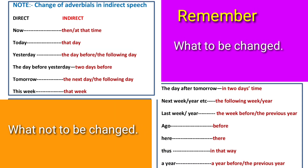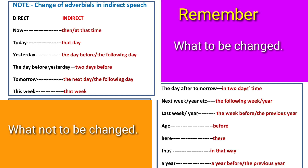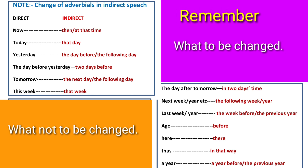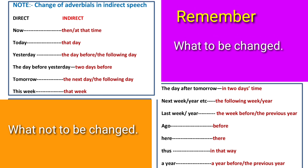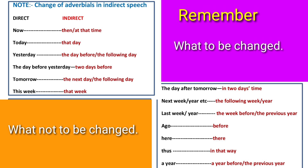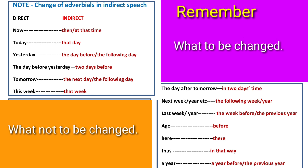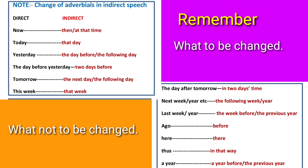Look at the change of time expressions in indirect speech. Direct to indirect: 'now' changes into 'then' or 'at that time'; 'today' changes into 'that day'; 'yesterday' changes into 'the day before'; 'the day before yesterday'; 'tomorrow' changes into 'the next day' or 'the following day'; 'this week' changes into 'that week'; 'a year ago' changes into 'a year before'.